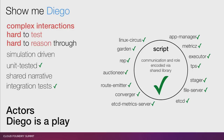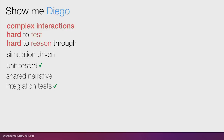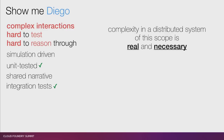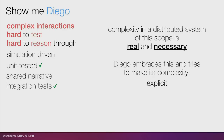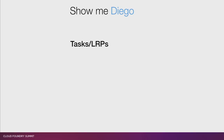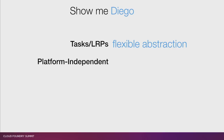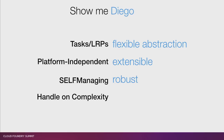This makes things more robust. Complexity in a distributed system of this scope is real and necessary — you can't hide from it. Diego embraces this and tries to make its complexity explicit, transparent, and therefore easier to reason about. To summarize: tasks and LRPs provide a flexible abstraction. It's platform independent, so it's extensible. It's self-managing, so it's robust. And we think we have a handle on complexity, which makes it agile — we can swap and change these ideas pretty easily.